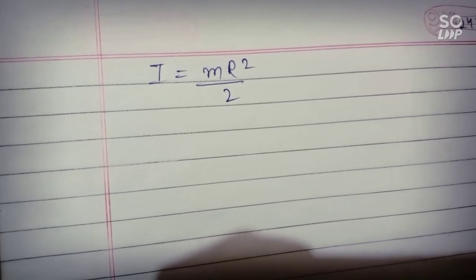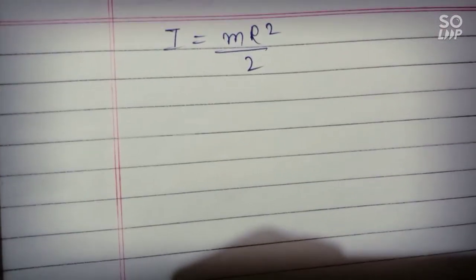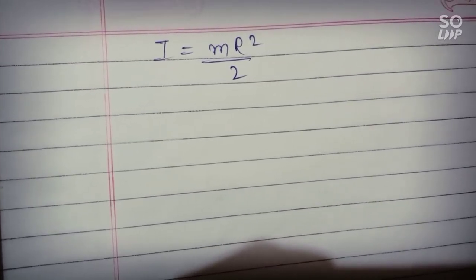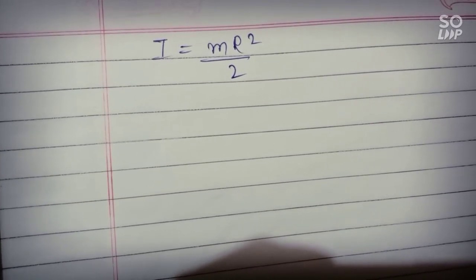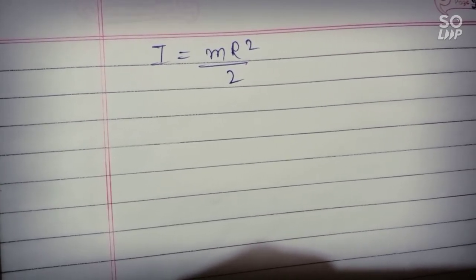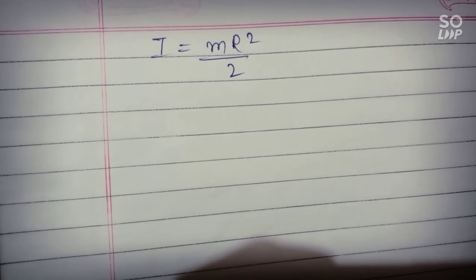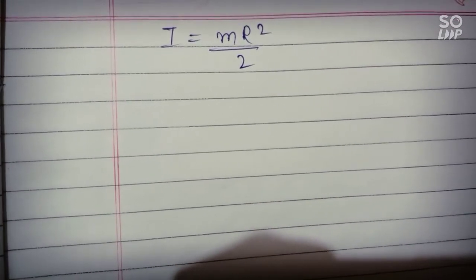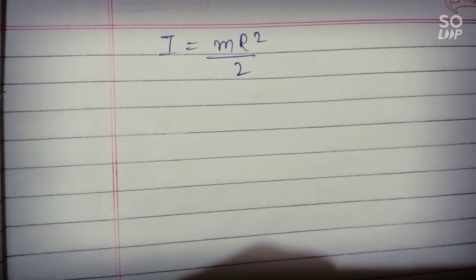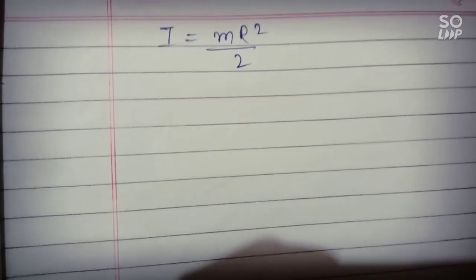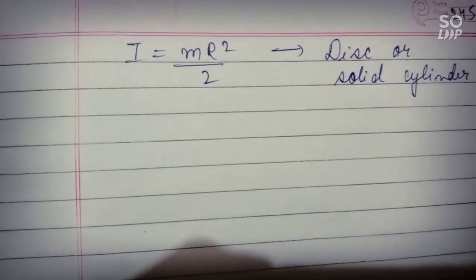Because a solid cylinder also acts like a disc. So there were four options given: one was solid sphere, one was disc, ring, and another. So from these options you need to pick the disc one option.